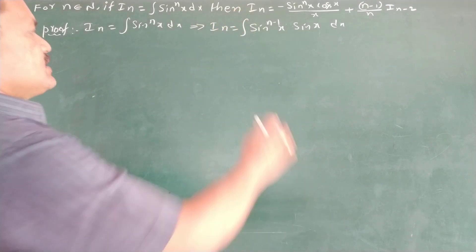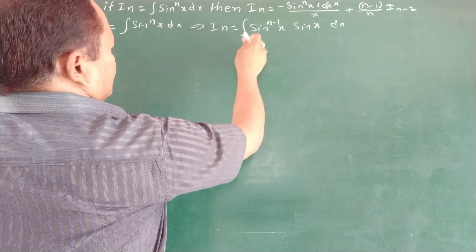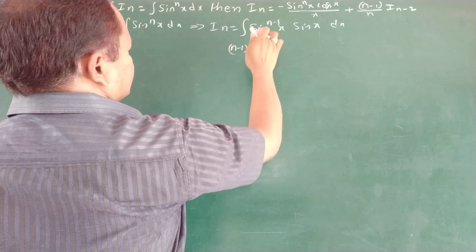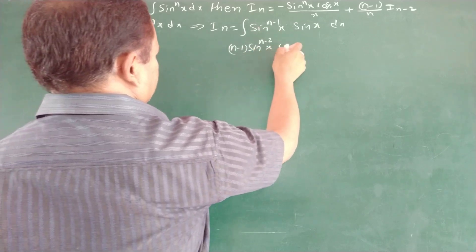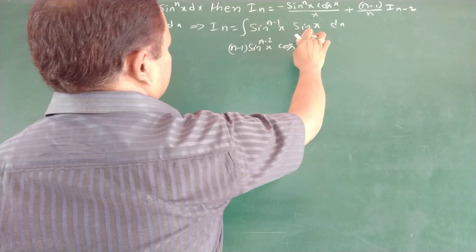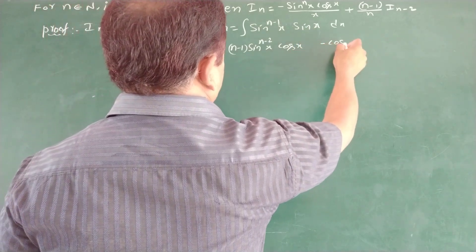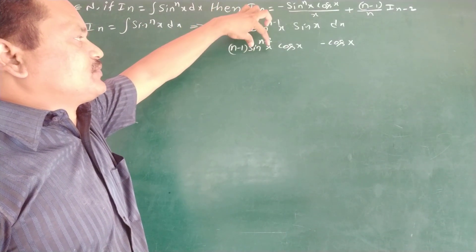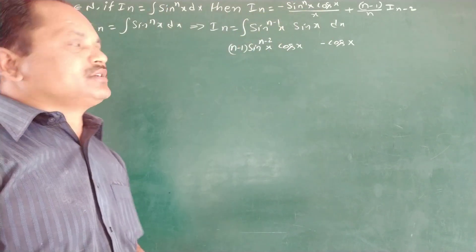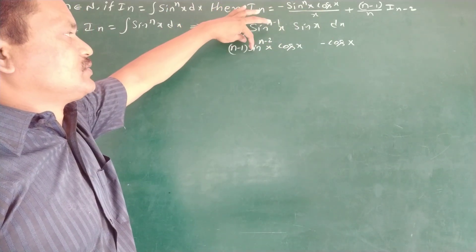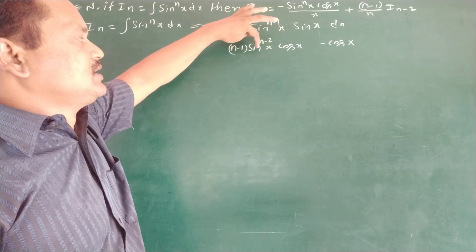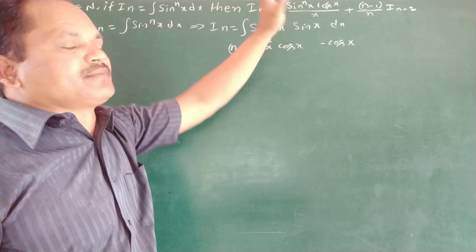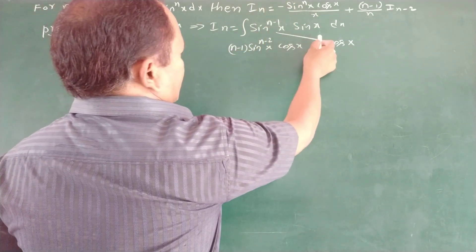Now for the first function, we write the differentiation: (n minus 1) times sinⁿ⁻²x, and the inner derivative of sin x is cos x. For the second function, the integration of sin x is minus cos x. In the shortcut way, we write the differentiation for the first term and integration for the second using the arrow mark system.